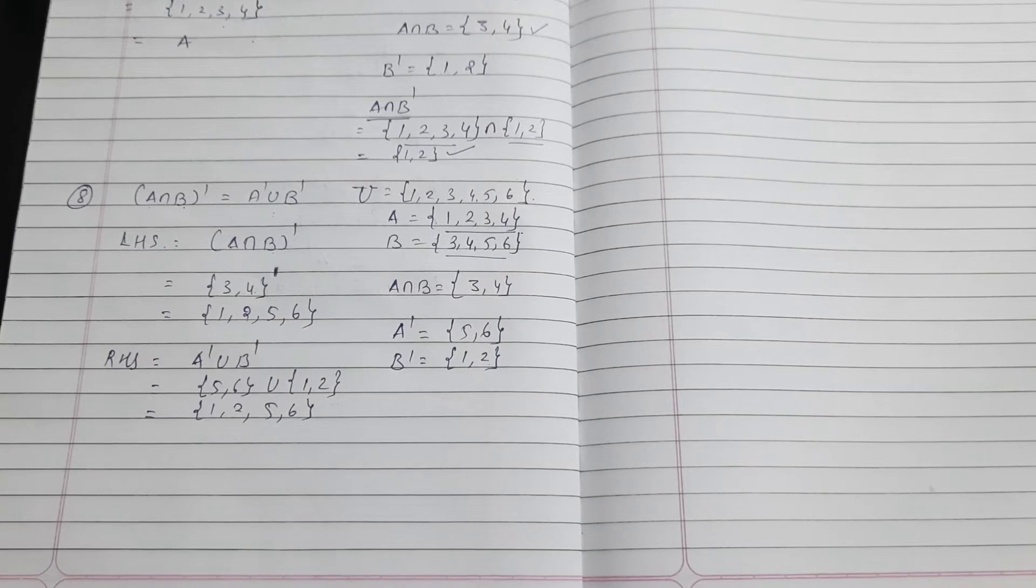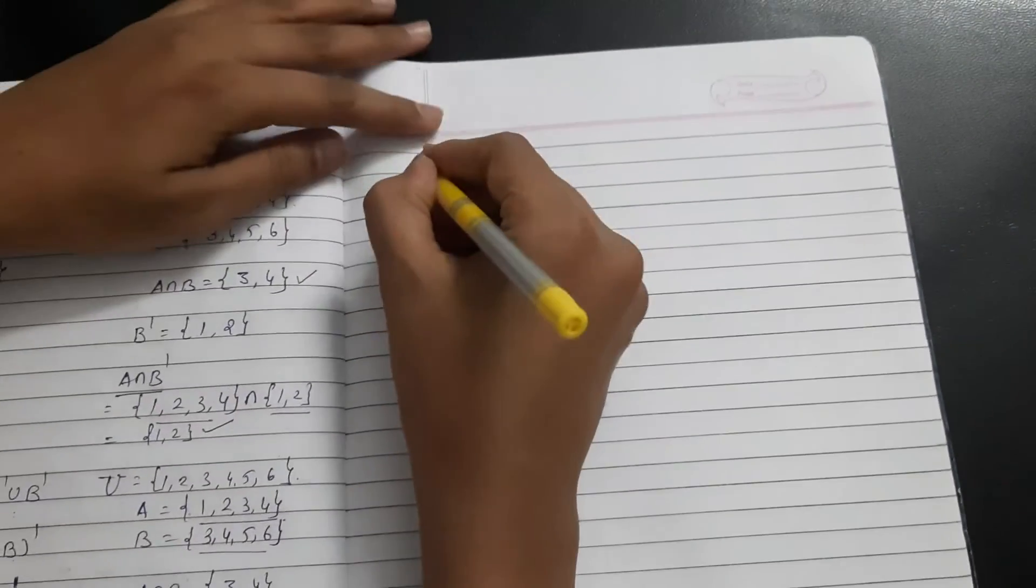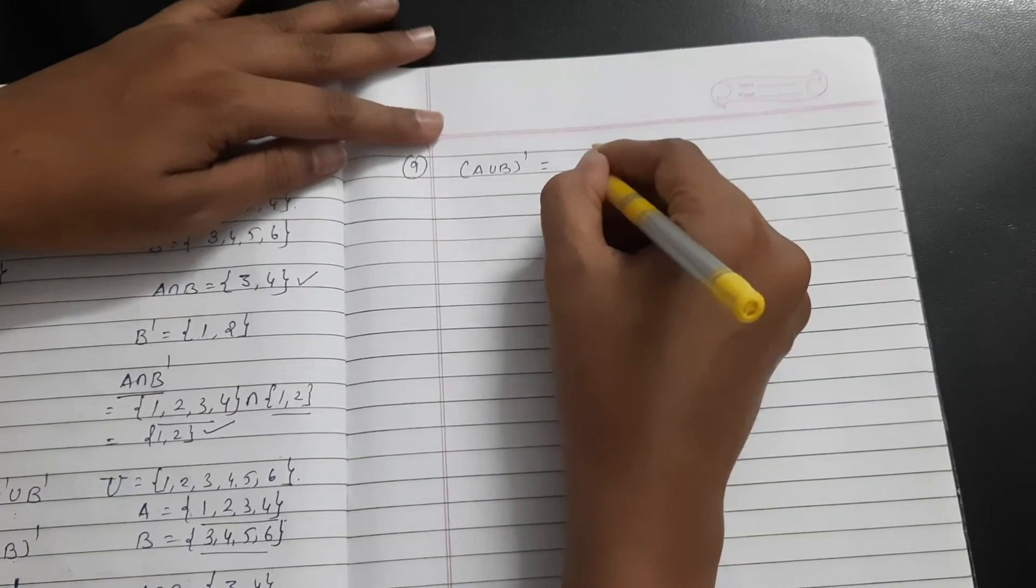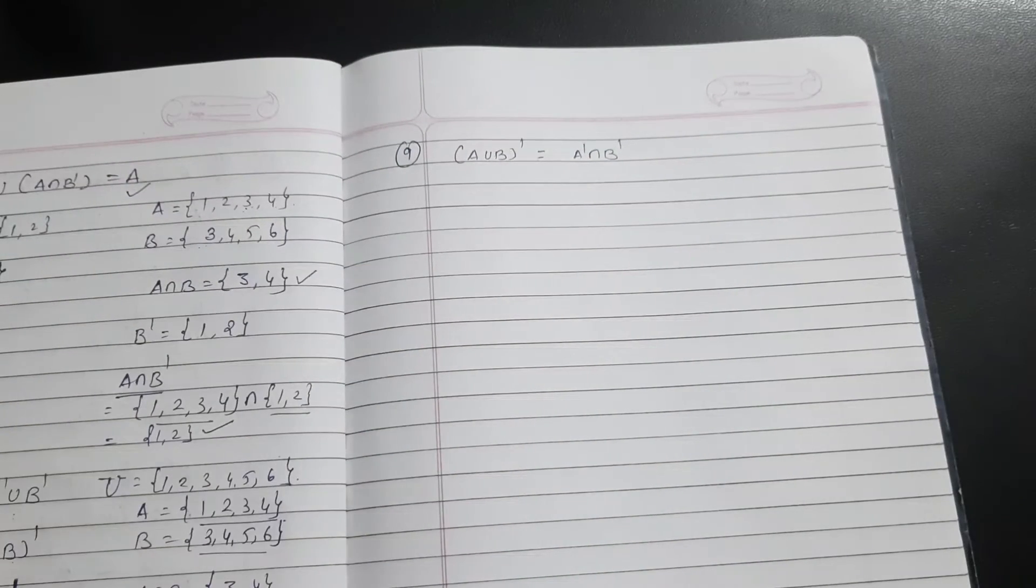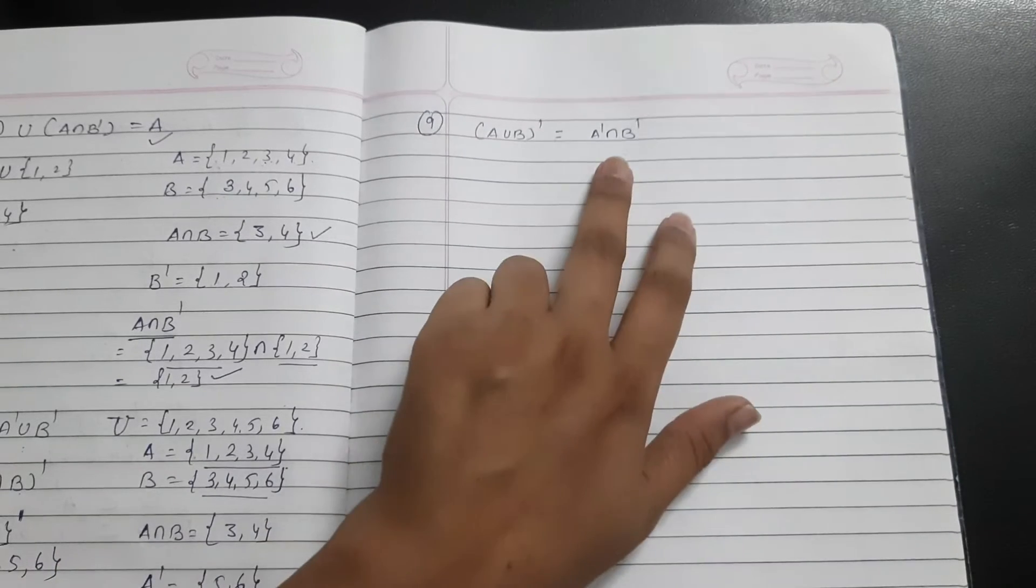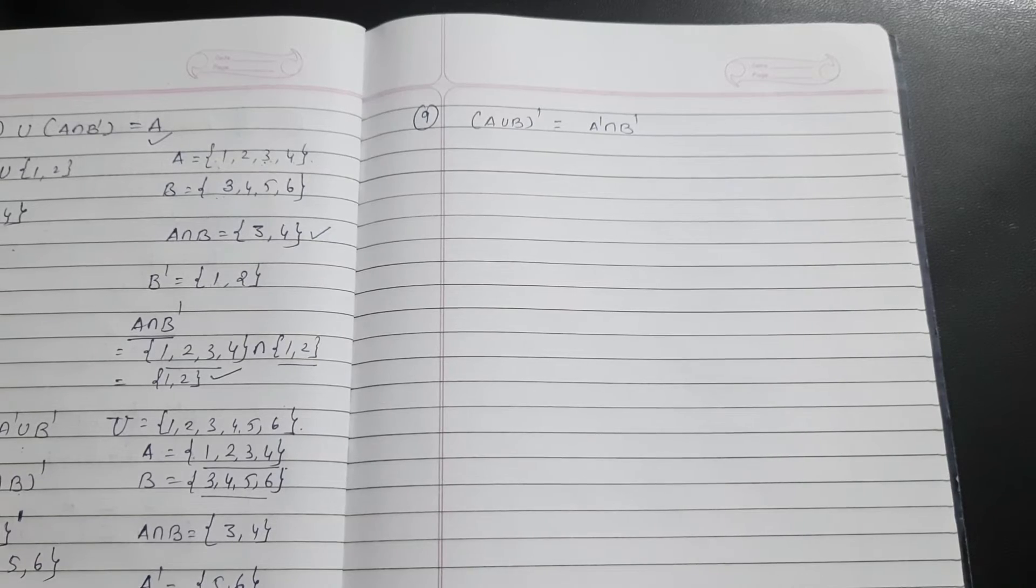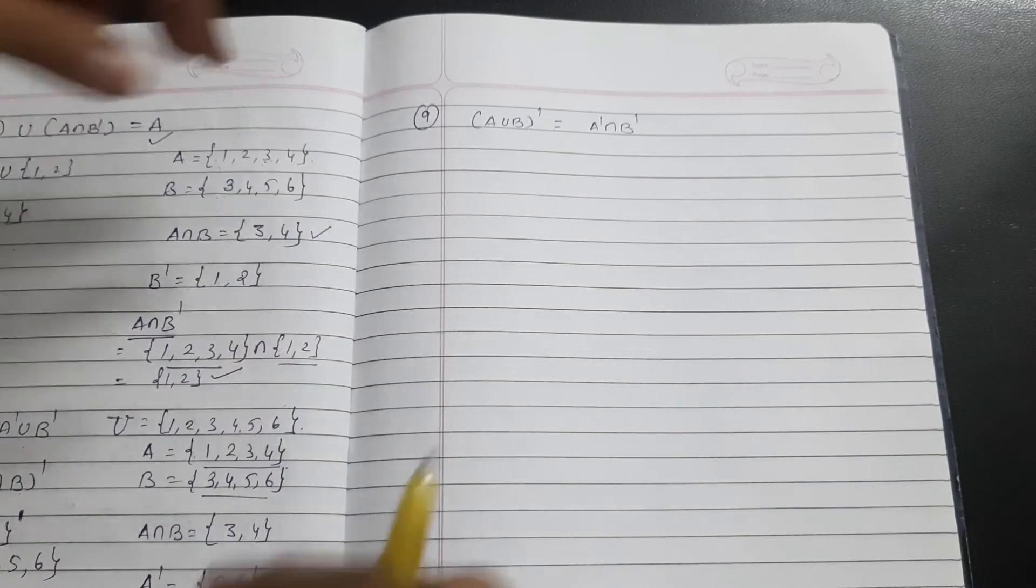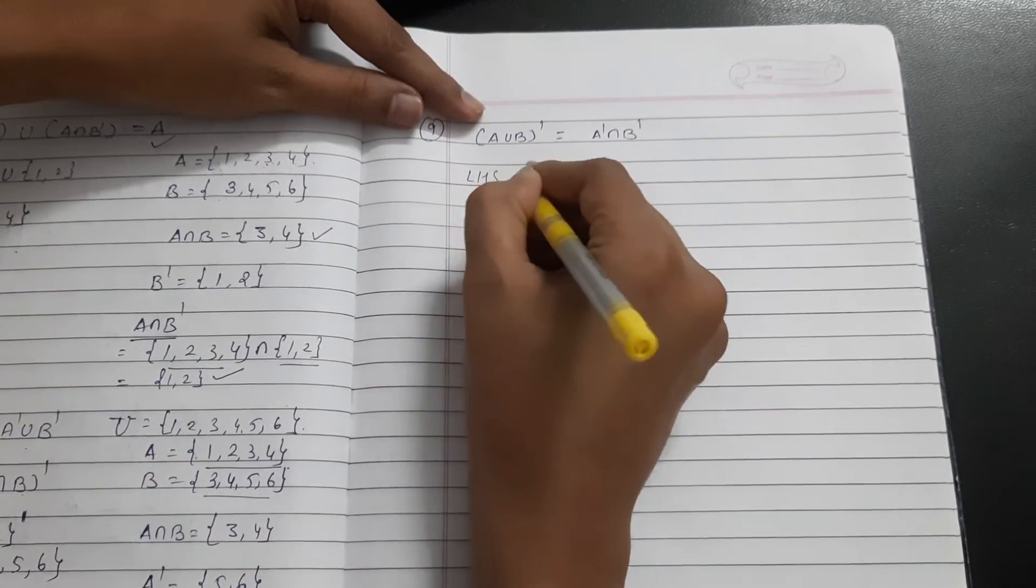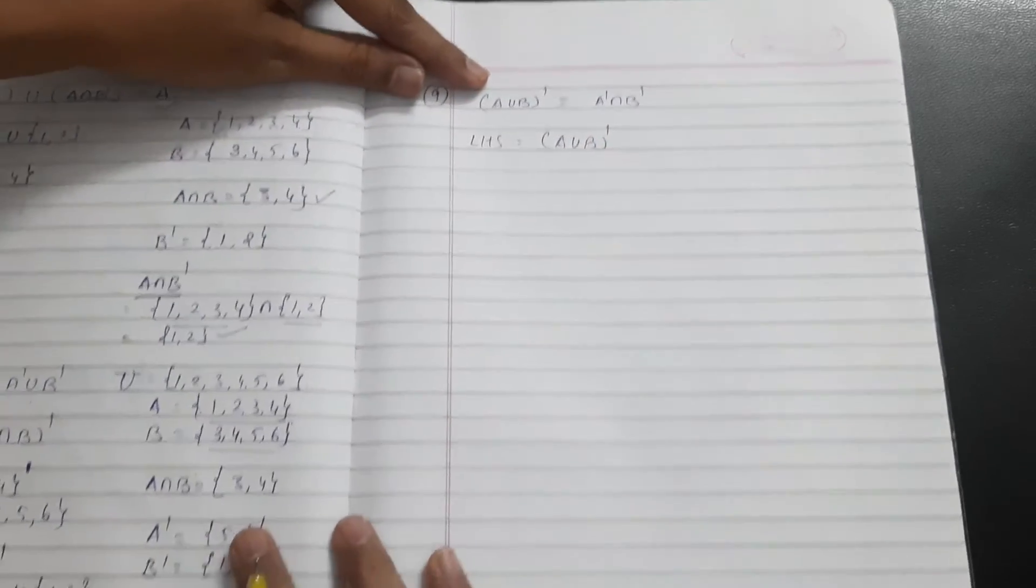Next is De Morgan's second property, which is complement related. The property is: A union B whole dash is equal to A dash intersection B dash. When we do union then complement, the answer is the same as individual complements then intersection. Both are the same process - both left side and right side give the same result.